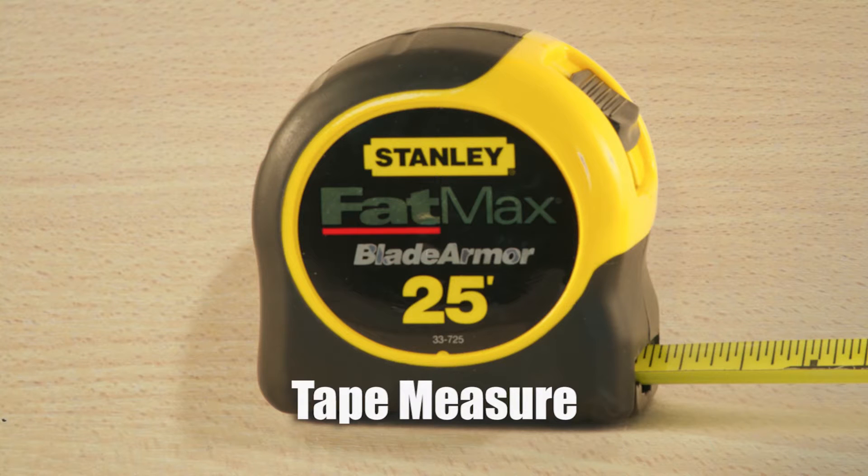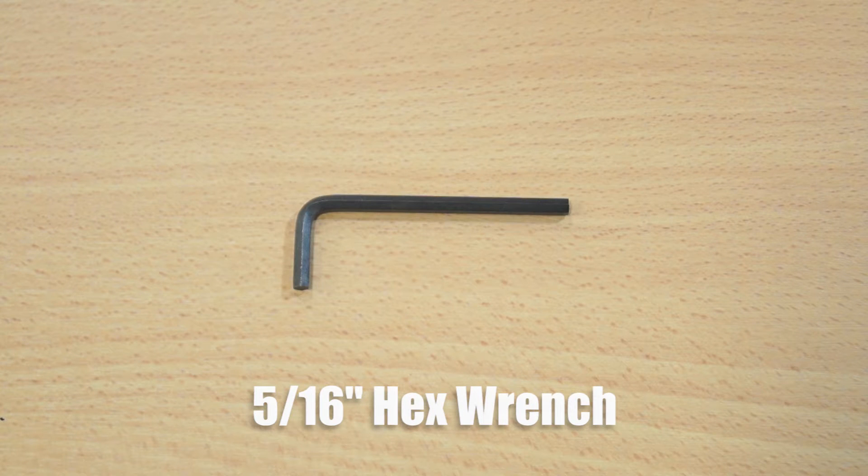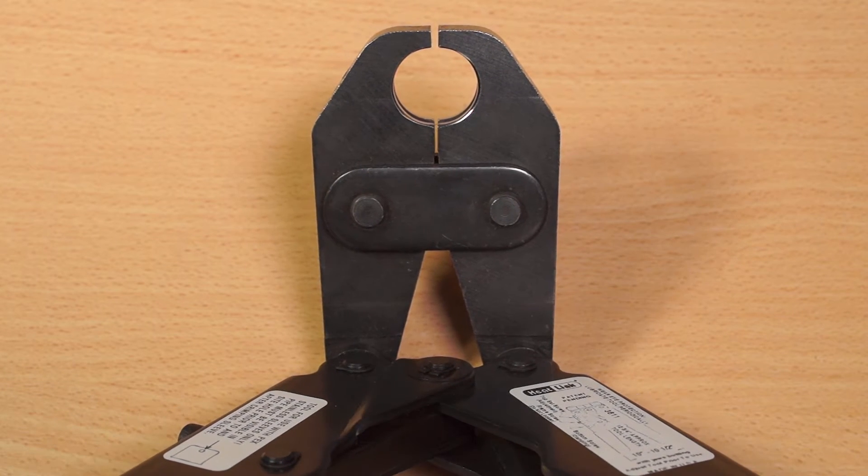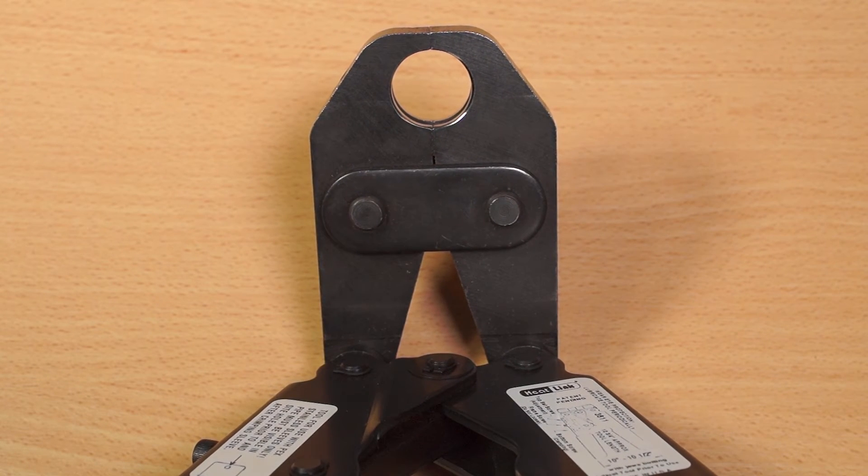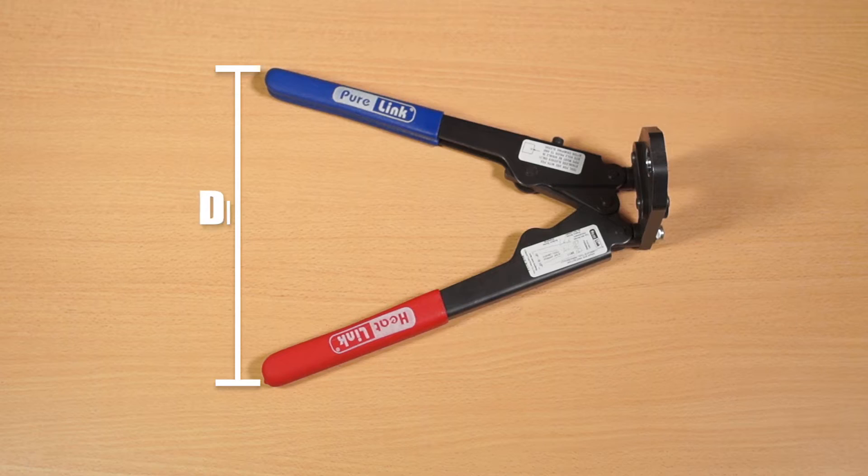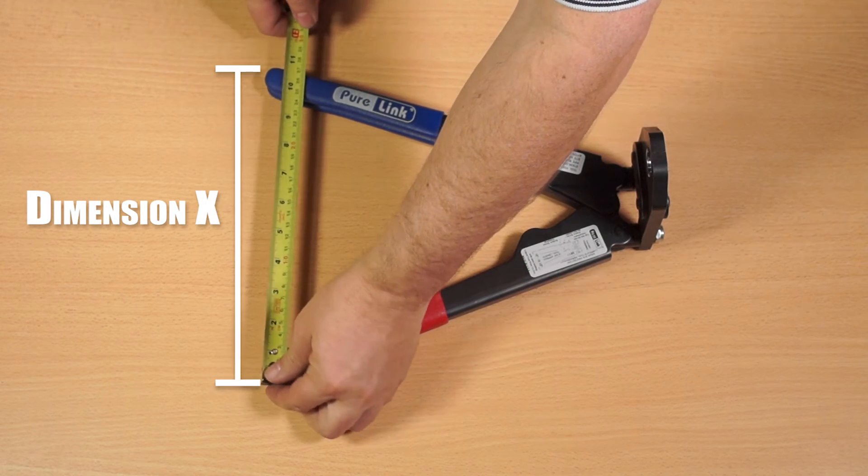You will need a tape measure, the go no-go gauge, and a 5/16 hex wrench. Close the handles until they reach the preload position, just as the jaws butt together. Measure dimension x from the outside edges of the handles and compare to the measurement in the potable installation guide or on the tool's adjustment sticker.